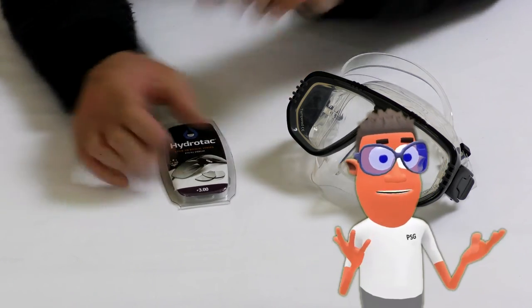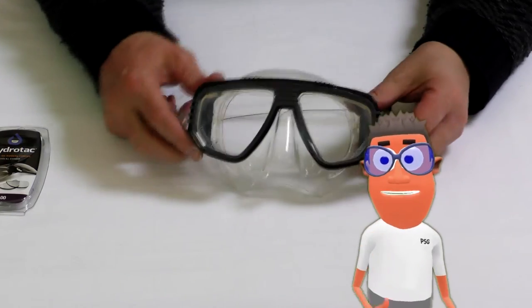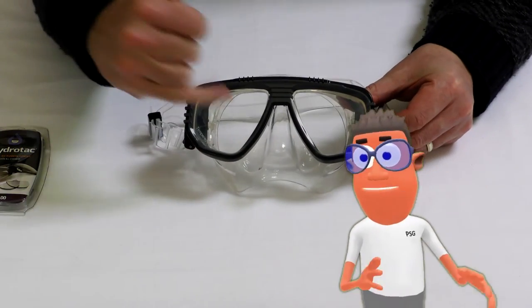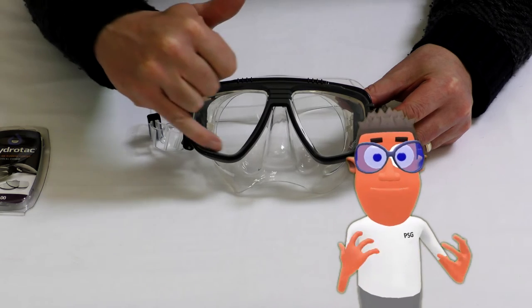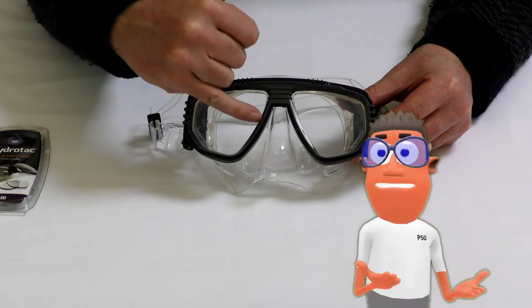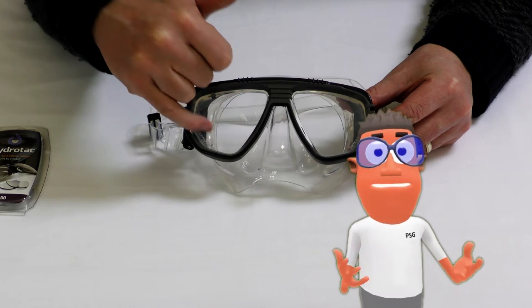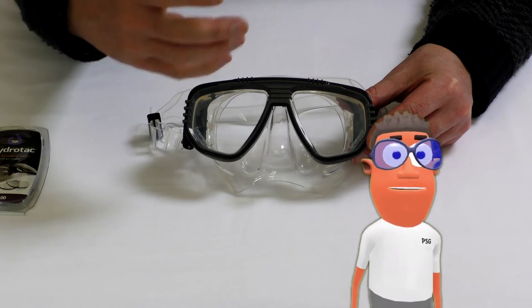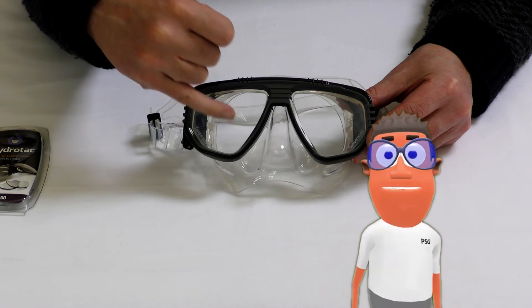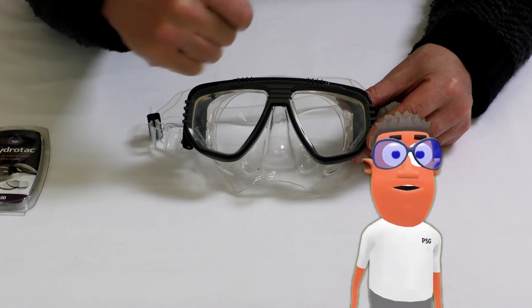The option otherwise is to have a mask like this, but we send it away and have a bifocal lens bonded onto the whole of the lens here. So you will then have your distance correction at the top and your reading correction at the bottom. If you need both long distance glasses and reading glasses, that is going to be the way to go.